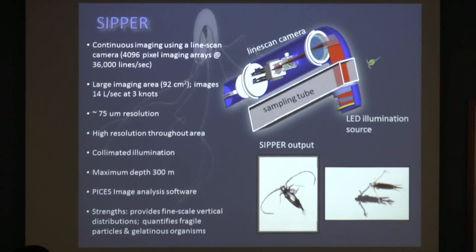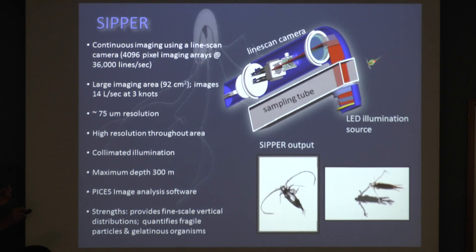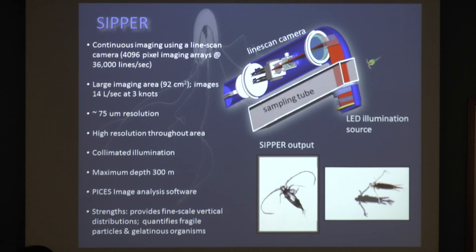This is the camera system that we use, designed and built here in the college. You put it on a towed platform, and as you're towing forward, zooplankton travel through the sampling tube. The light source is on one side and the camera is on the other side, so what we're actually getting are images of the shadows of the organisms. Animals that are fairly translucent, like jelly plankton, we get a lot of detail, and in very dense animals we might get more of an outline.